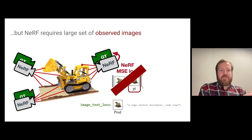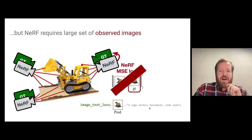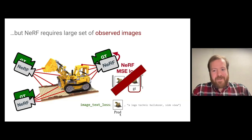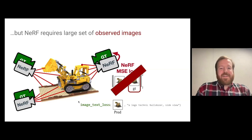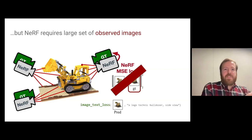The downside of NeRF is that it requires a large set of observed images — it captures existing objects. When generating new things, we don't have ground truth; we might only have a text description. So we want to replace the mean squared error loss against ground-truth views with an image-text loss — one that scores how well a rendered view matches a text description like 'a LEGO technic bulldozer, side view.'